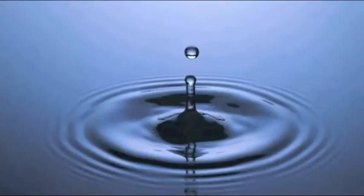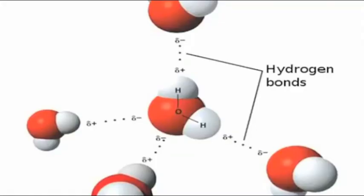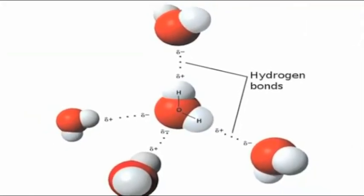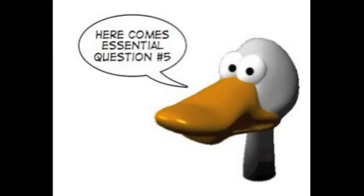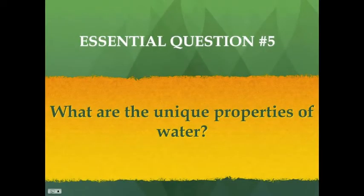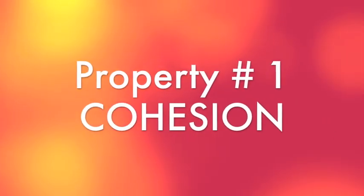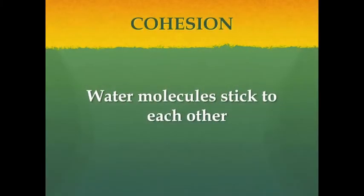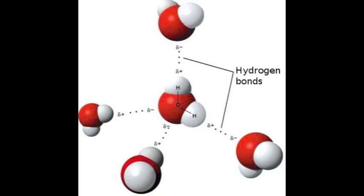Water's polarity allows it to stick to itself. The bonds that form between individual water molecules are called hydrogen bonds. Essential question number five: What are the unique properties of water? The first property is cohesion — water's ability to stick to other water molecules. The five water molecules in this picture are attracted to one another and forming hydrogen bonds because of the opposite charges found on opposite ends of the individual water molecules.